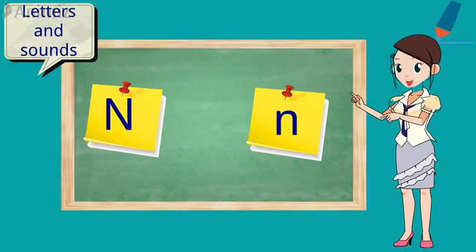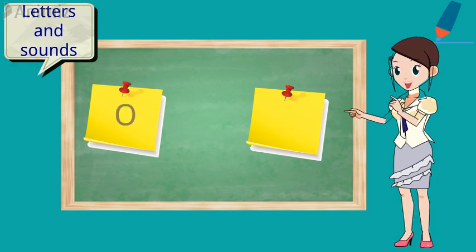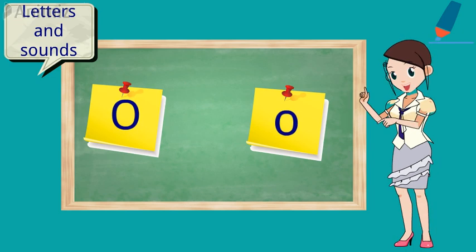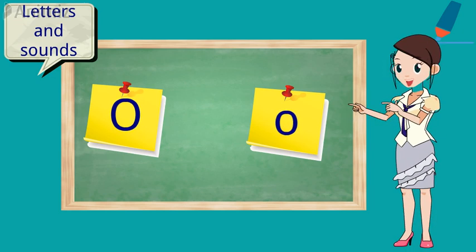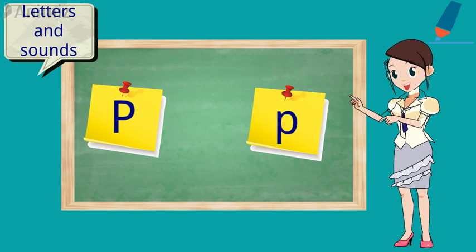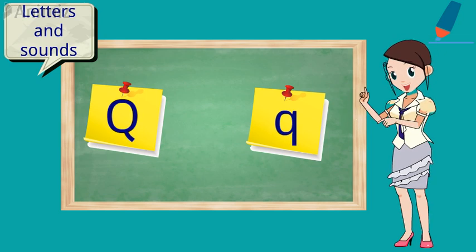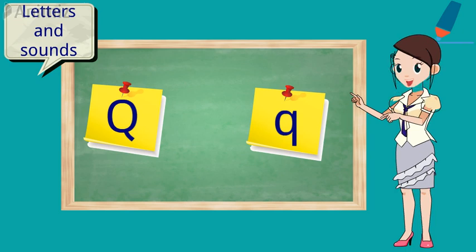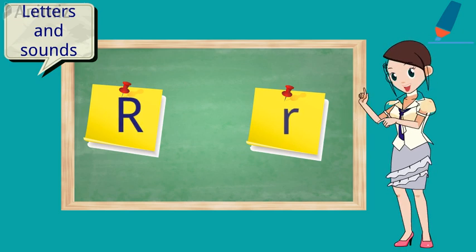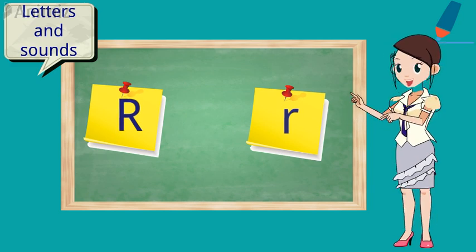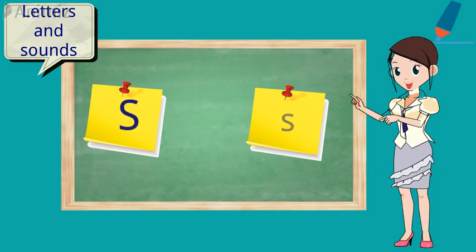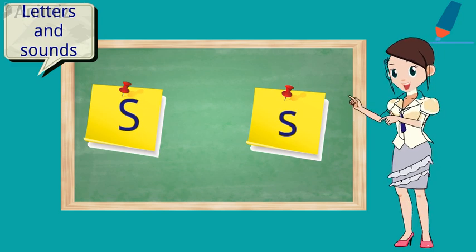Every letter makes a sound. And N says N. The O says O. Every letter makes a sound. And O says O. The P says P. Every letter makes a sound. And P says P. The Q says Q. Every letter makes a sound. And Q says Q. The R says R. Every letter makes a sound. And R says R. The S says S. Every letter makes a sound. And S says S.